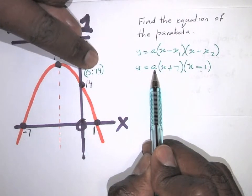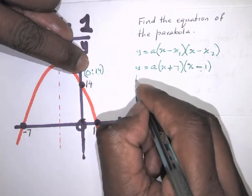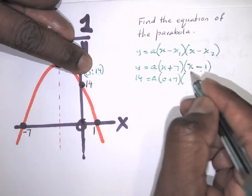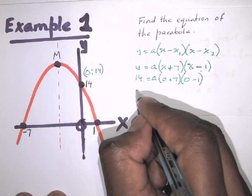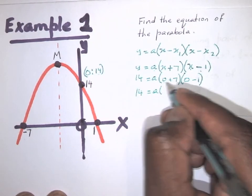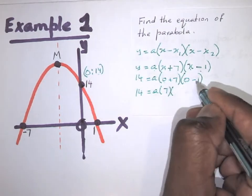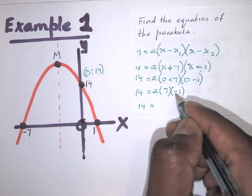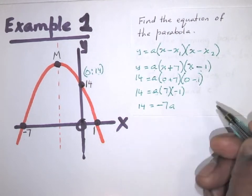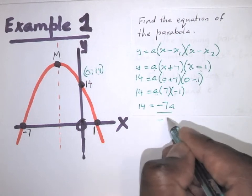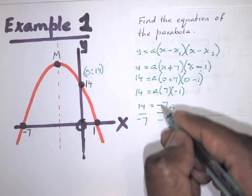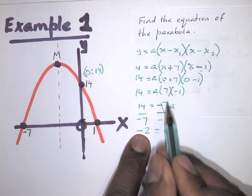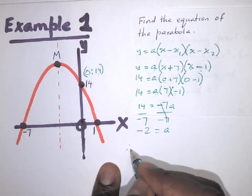To find a, substitute x = 0 and y = 14: 14 = a(0 + 7)(0 − 1). That gives 14 = a × 7 × (−1), so 14 = −7a. Dividing both sides by −7 gives a = −2.